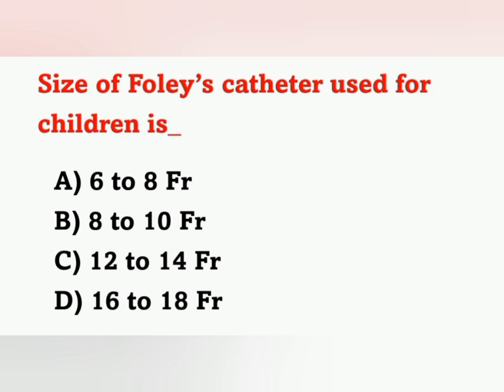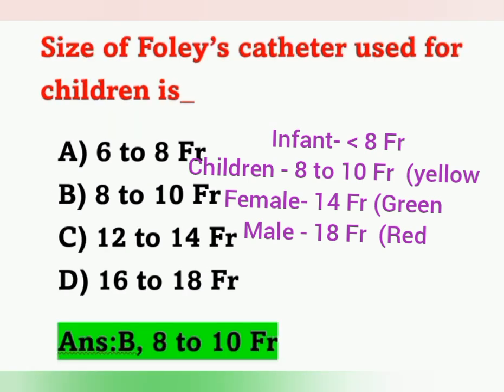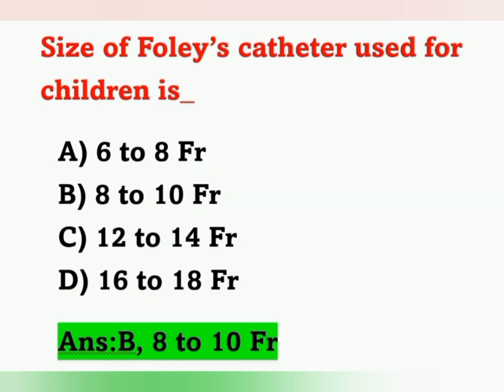Next question: Size of the Foley catheter used for children. Options: A) 6 to 8 French, B) 8 to 10 French, C) 12 to 14 French, D) 16 to 18 French. For infants, less than 8 French; for children, 8 to 10 French (yellow color). For females, commonly 14 French (green) or 12 French (white). For males, 18 French (red) or 16 French (orange). The correct answer for children is 8 to 10 French — Option B.